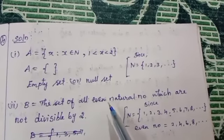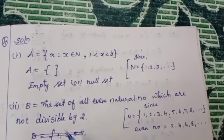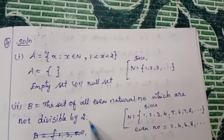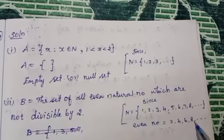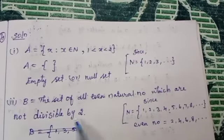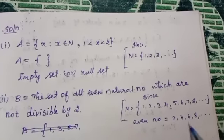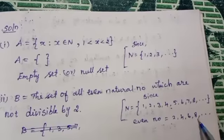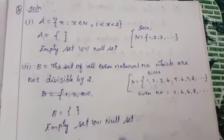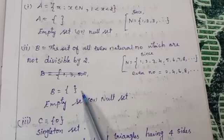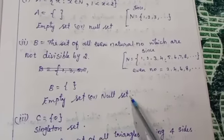We need to select elements that are even natural numbers not divisible by 2. But all even natural numbers are divisible by 2. So any even number not divisible by 2 — any values here? No. So this is empty set. B is equal to empty set, or null set.